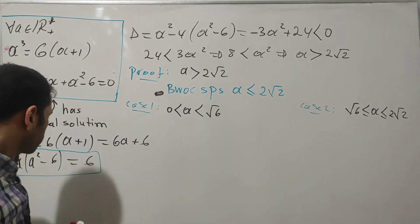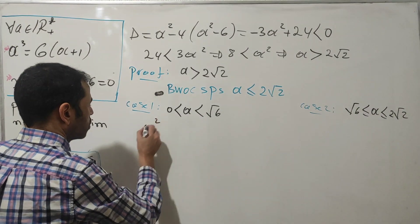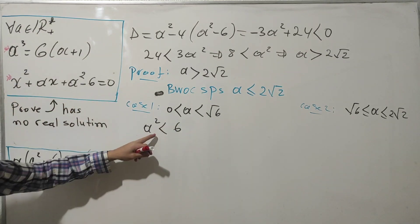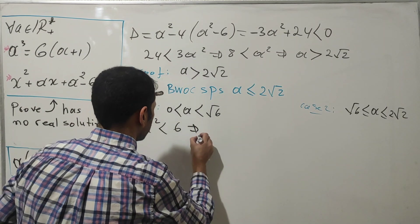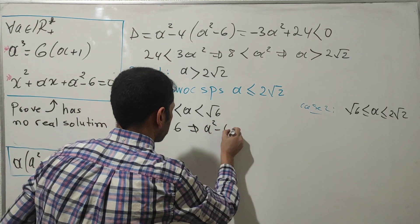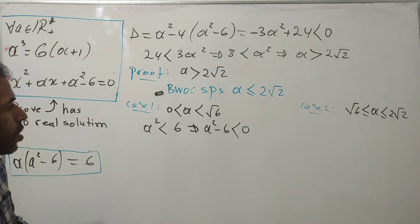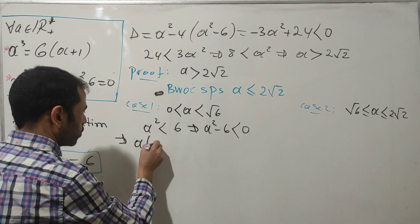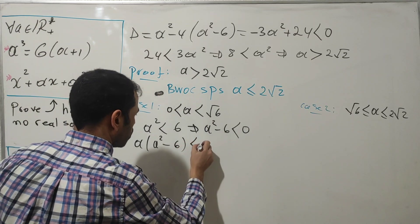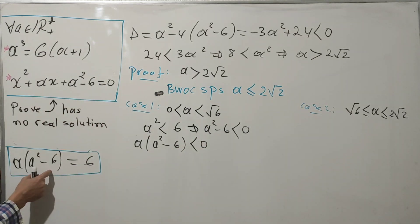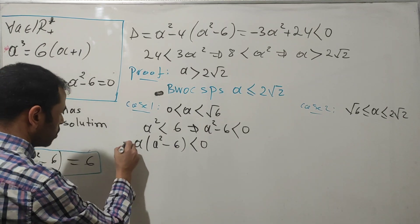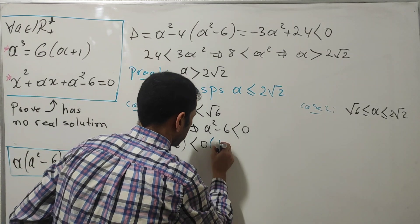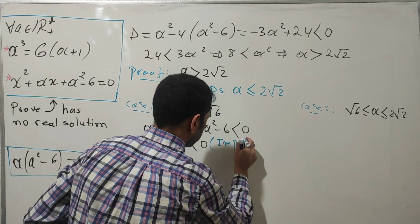Starting with Case 1: since 0 < a < √6, we know a² < 6, so a² - 6 is strictly less than zero. Multiplying both sides by a (which is positive), we get a(a² - 6) < 0. But we established that a(a² - 6) = 6, so we get 6 < 0 — which is impossible. This is Contradiction 1.